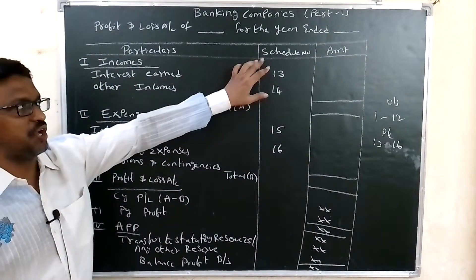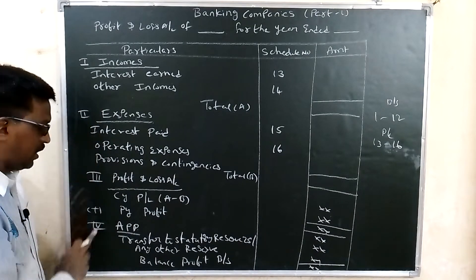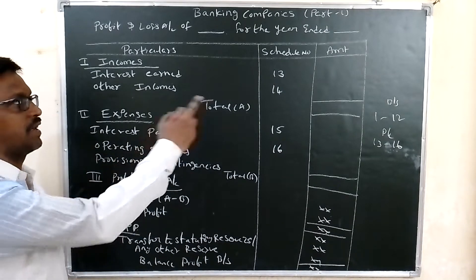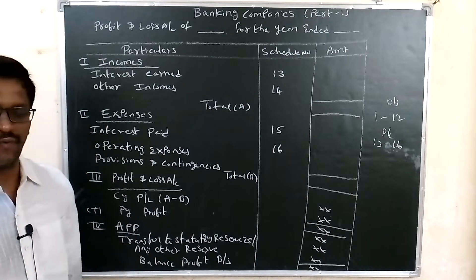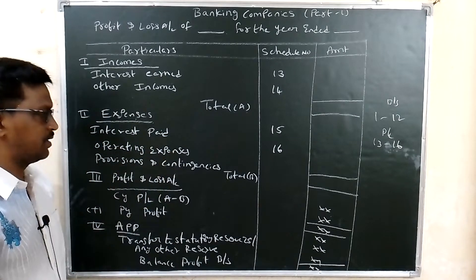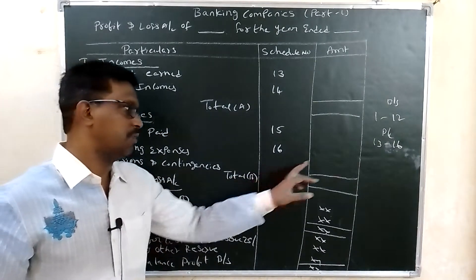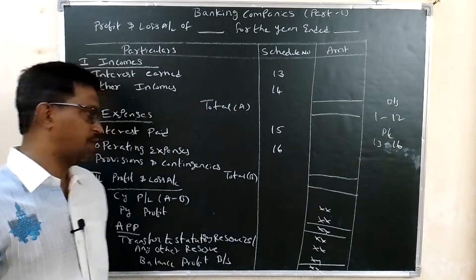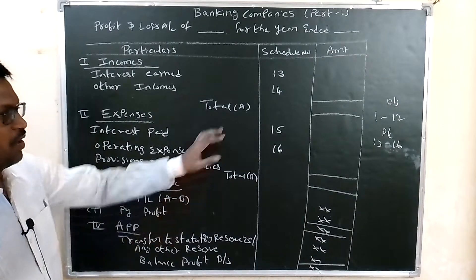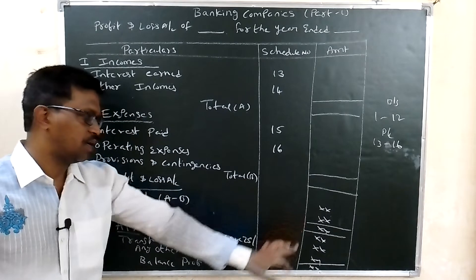The profit and loss account has four parts, denoted by Roman numerals I to IV. Roman number I: Interest Earned — Schedule 13. Roman number II: Other Incomes — Schedule 14. Total A. Expenses: Interest Paid — Schedule 15, Operating Expenses — Schedule 16, Provisions and Contingency. Total B. Current year profit equals Total A minus Total B. Add previous year profit for the total.